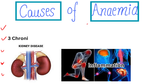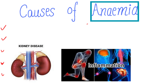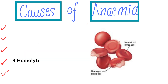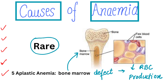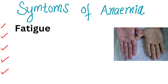The third cause is chronic diseases. Conditions like CKD, that is chronic kidney disease, or inflammation can affect RBC production. The fourth cause is hemolytic anemia, which is when the body destroys RBCs faster than it can make them. And the fifth cause is aplastic anemia, a rare type where the bone marrow does not produce enough blood cells.